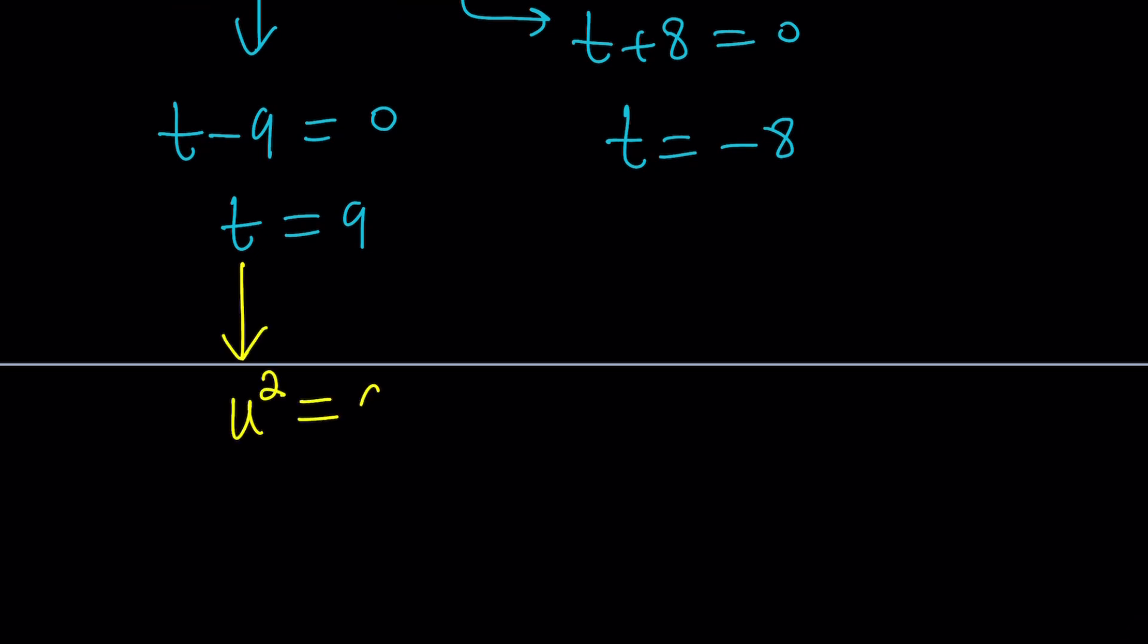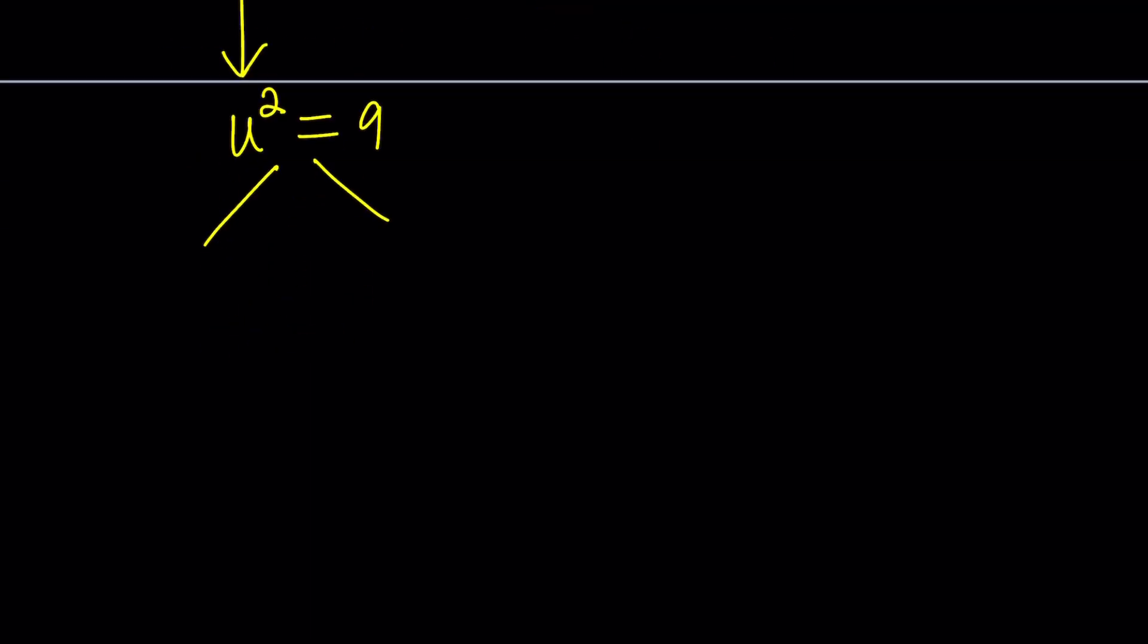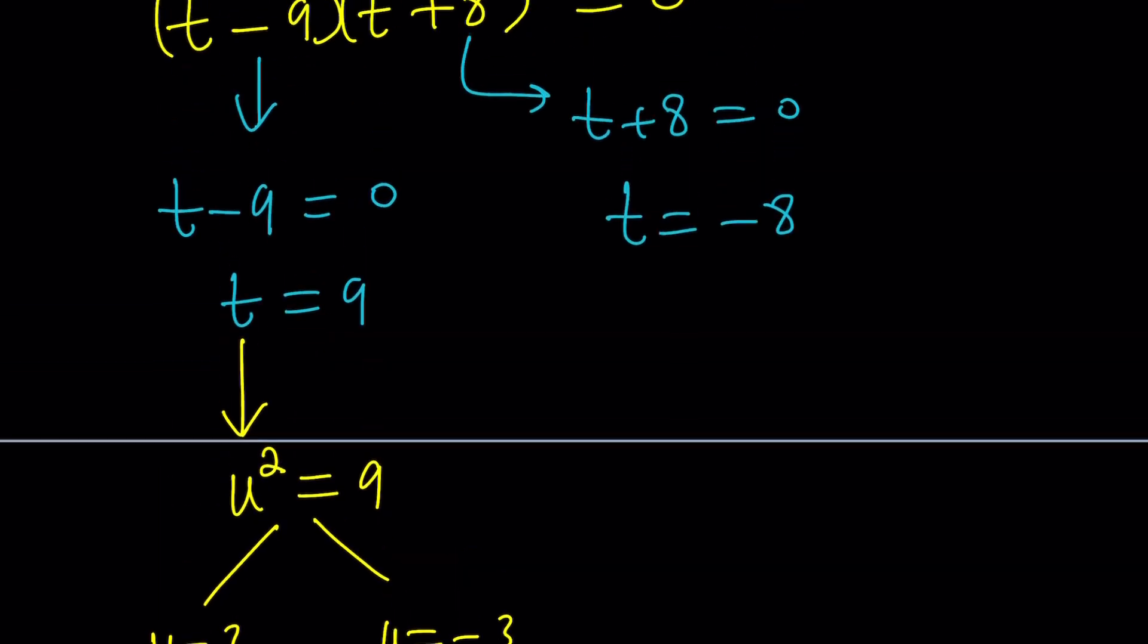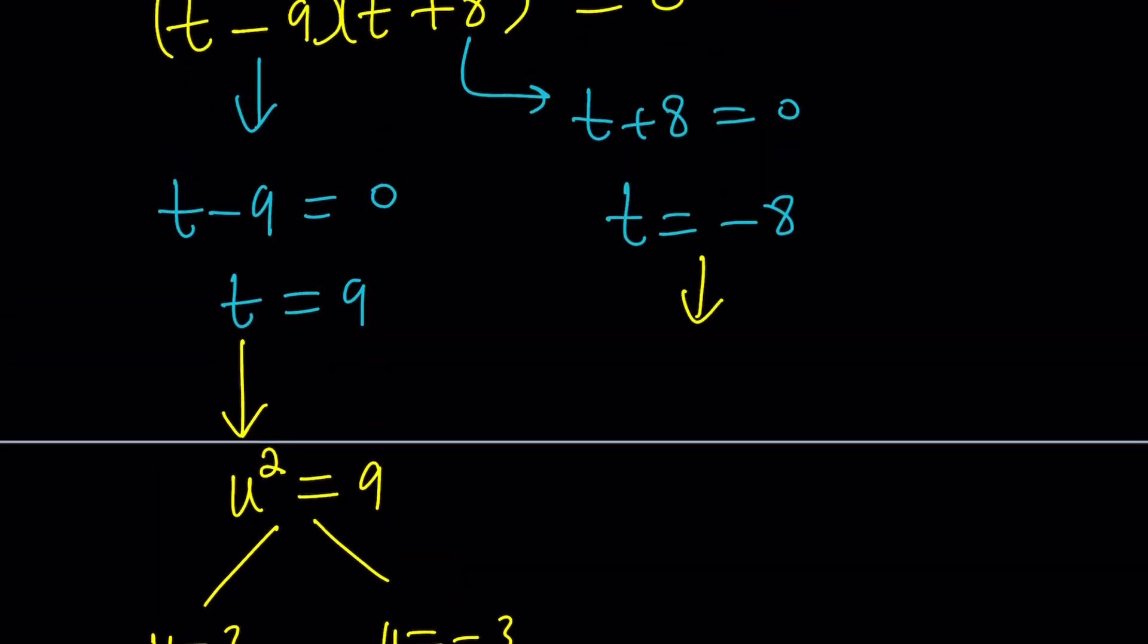It's going to give us two answers. As you know, u equals 3 and u equals negative 3. Awesome. But let's pause here and go to the other solution. t equals negative 8 means u squared equals negative 8. Uh-oh. This did not work well.